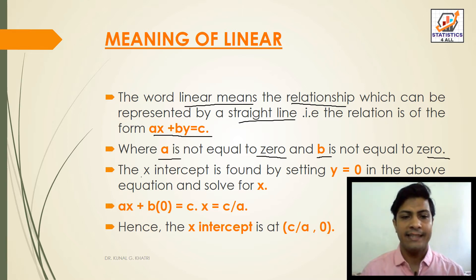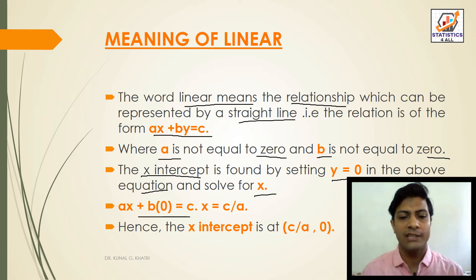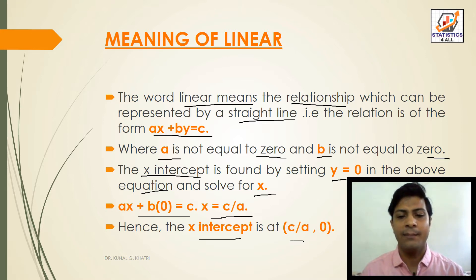The X-intercept is found by setting Y equal to 0 in the above equation and solving for X. That is, AX plus B into 0 equals C, therefore X equals C divided by A. Hence the X-intercept is at the point (C/A, 0).